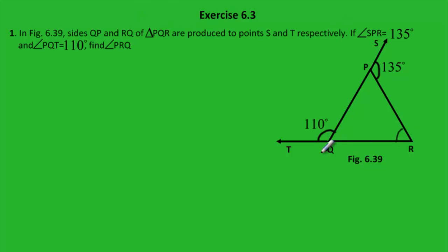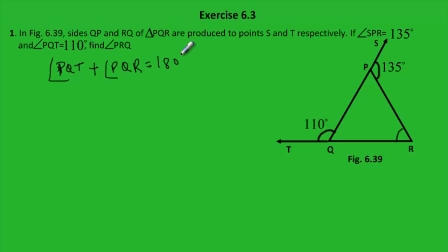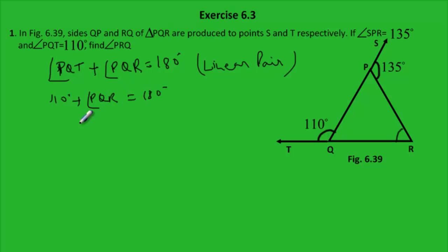We need to find angle PRQ. Now we know that angle PQT plus angle PQR is equal to 180 degrees because these two angles form a linear pair. Angle PQT is given equal to 110 degrees, plus angle PQR equals 180 degrees. This implies angle PQR is equal to 180 minus 110 degrees, which gives us 70 degrees.